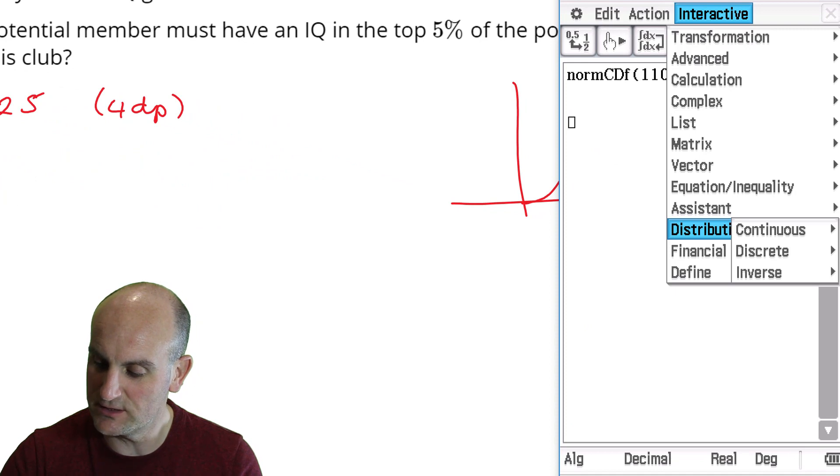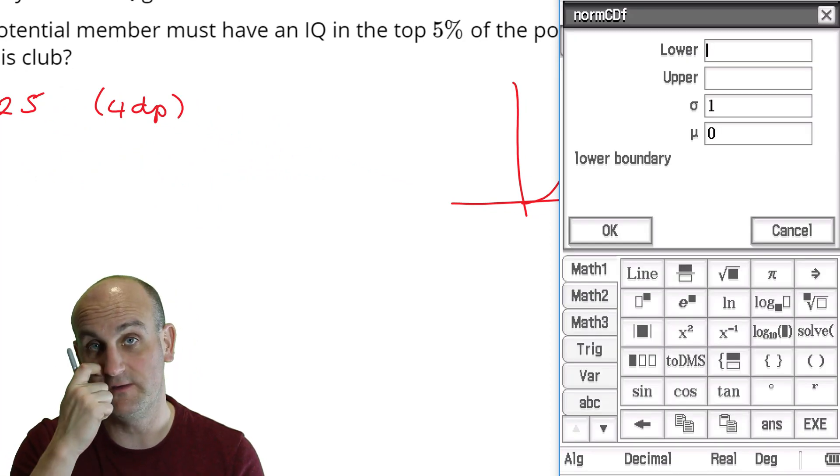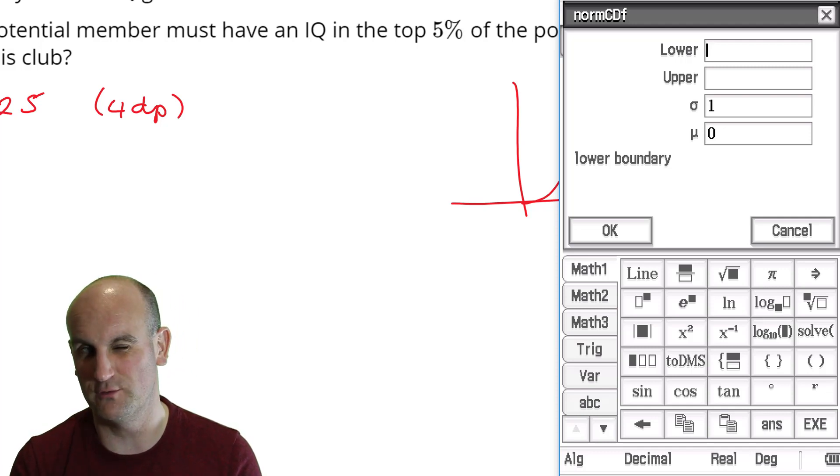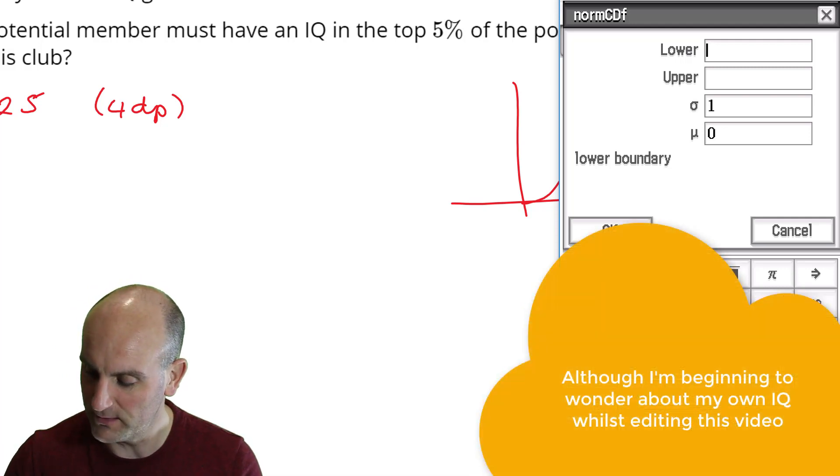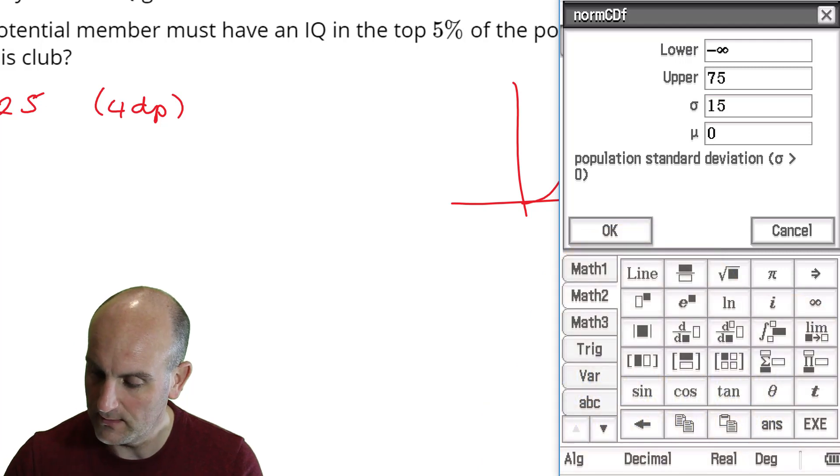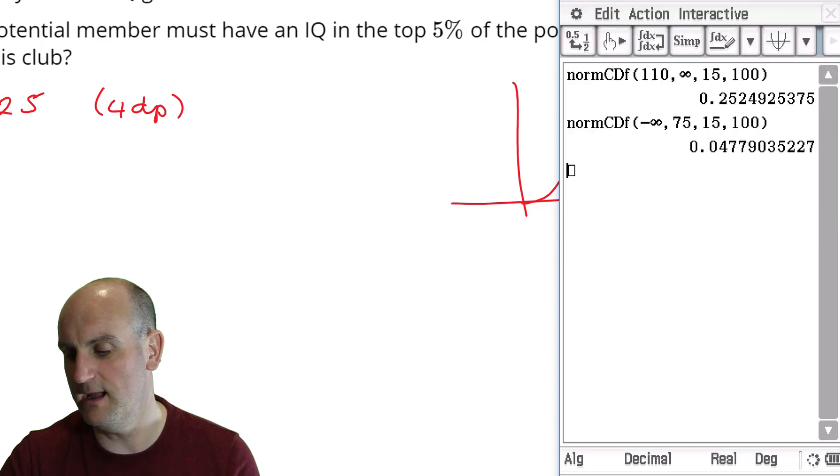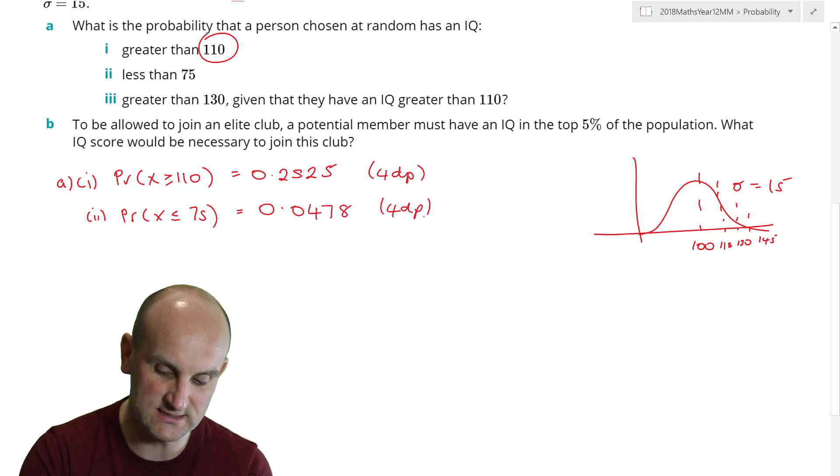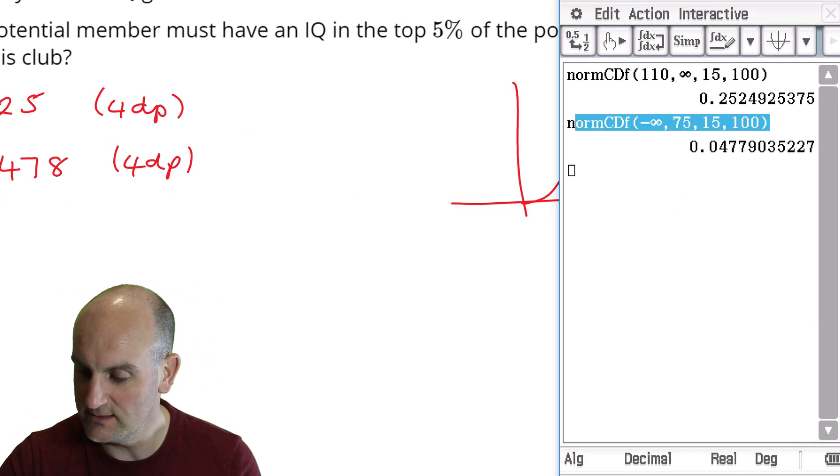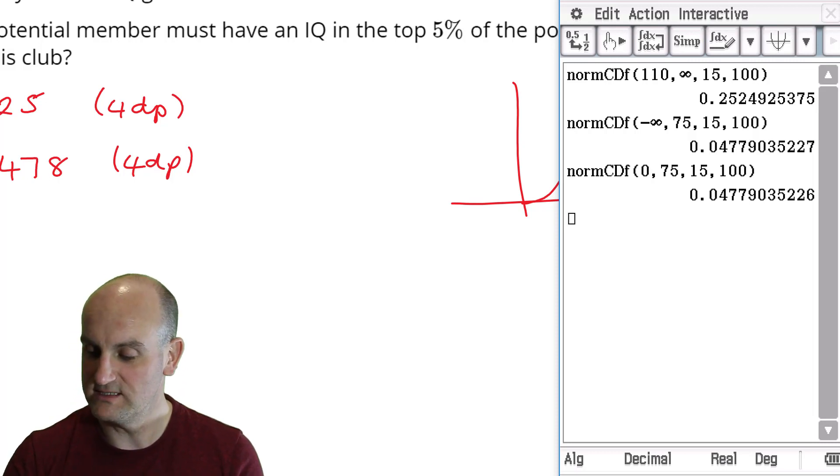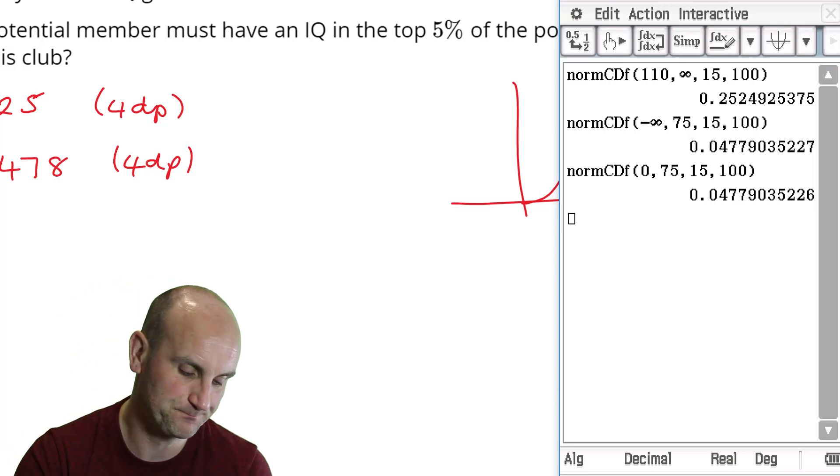We're going to use the same idea. This time what the probability that X is less than or equal to 75 is going to be. Interactive distributions continuous and normal CDF again. Now my lower bound in this situation is actually going to be, well I'm going to put minus infinity because I'm dealing with a normal distribution. But personally it would be unusual for a person to have a negative IQ. Let's actually do both and see what happens. So I'm going to do negative infinity. My upper bound in this situation is 75. My sigma is 15. My mu is 100. Out comes my probability of 0.0478. Let's just see what happens when I put zero in for this. And lo and behold almost the same answer. What do we notice that last decimal places a six against a seven. But to all intents and purposes zero would actually work there because you can't have a negative IQ.